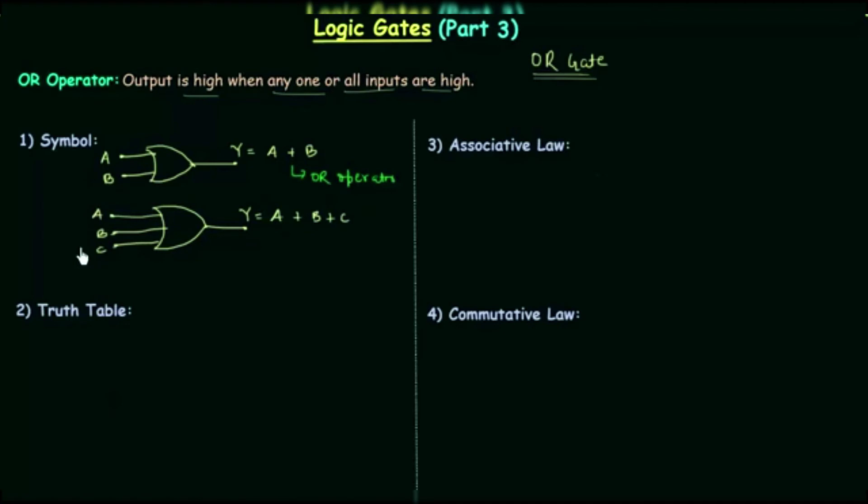Now we will move to truth table. I will take two input OR gate. A and B are the two inputs, and Y is the output equal to A OR B. As there are two inputs we will have four combinations. For the first combination, A equals zero and B equals zero. From the definition, the output is high when any one or all inputs are high. But in this case A is zero and B is zero, so we don't have any input equals to one. So output Y is going to be zero.